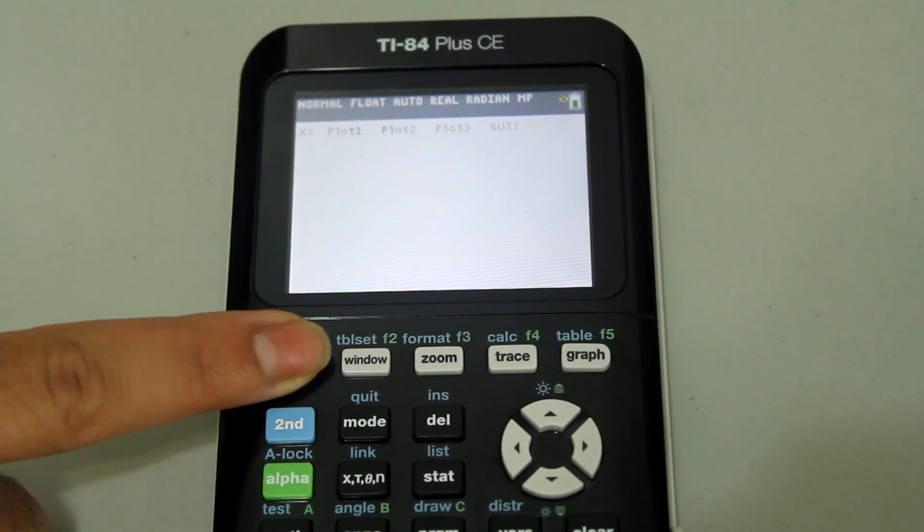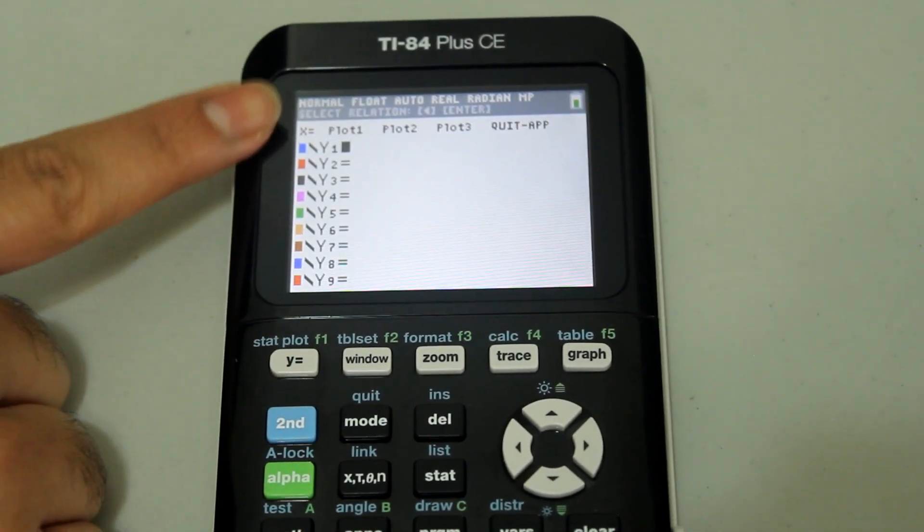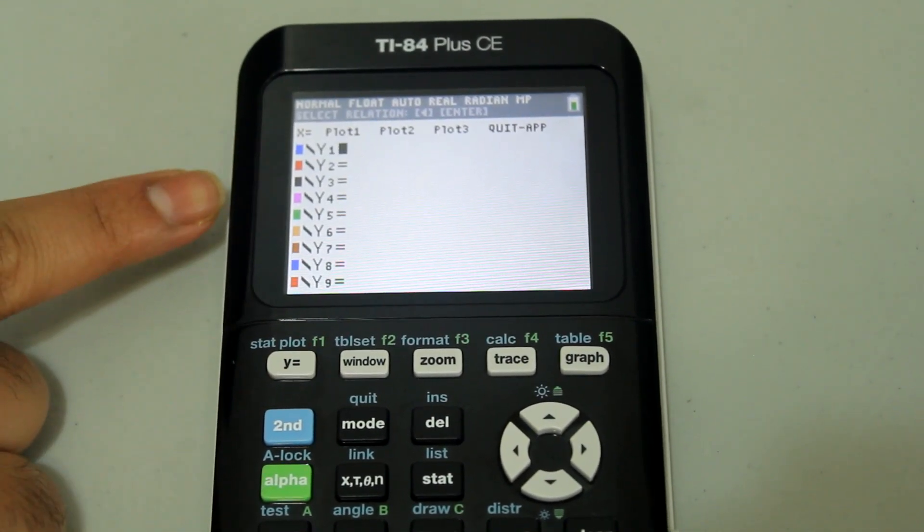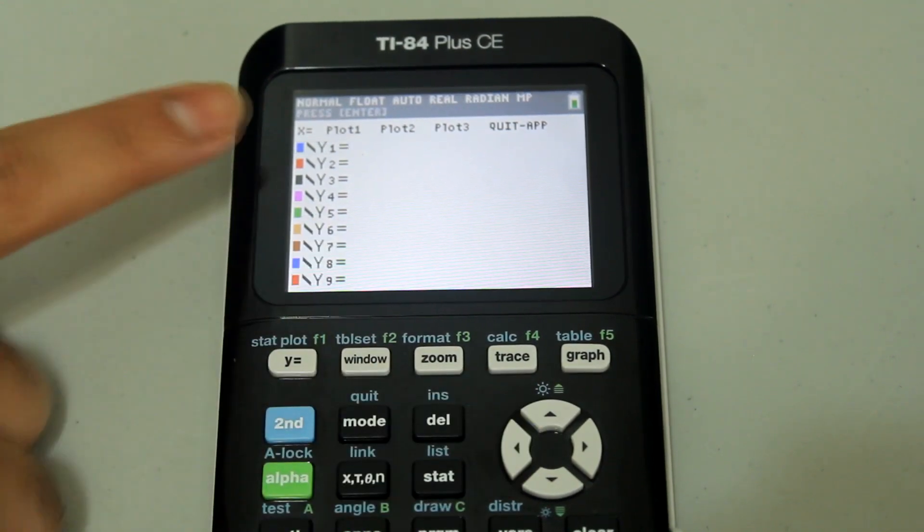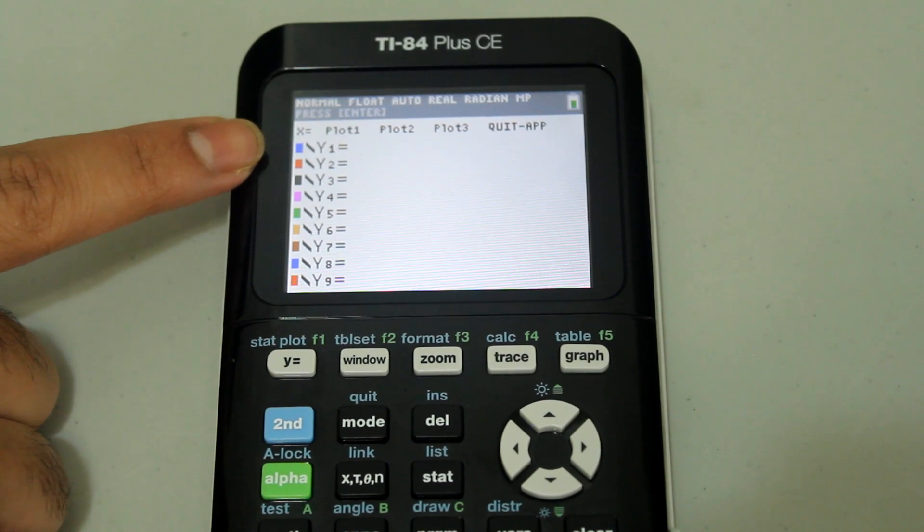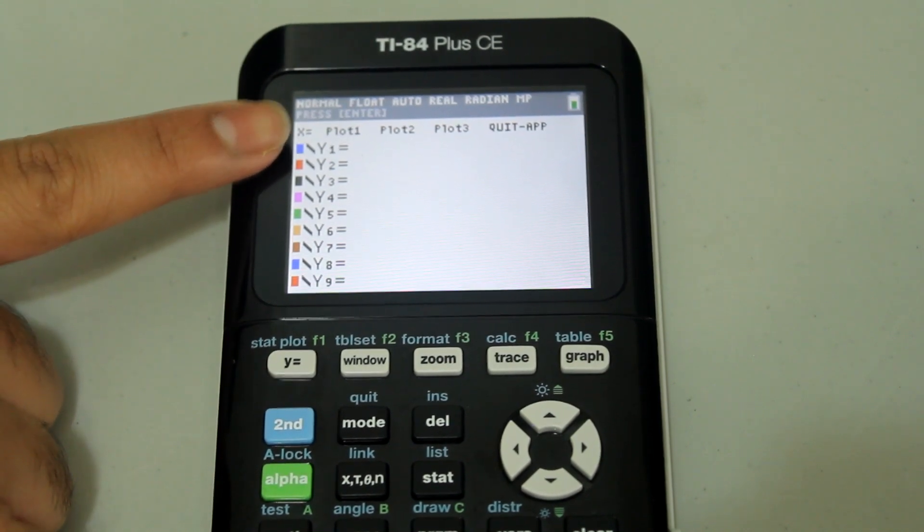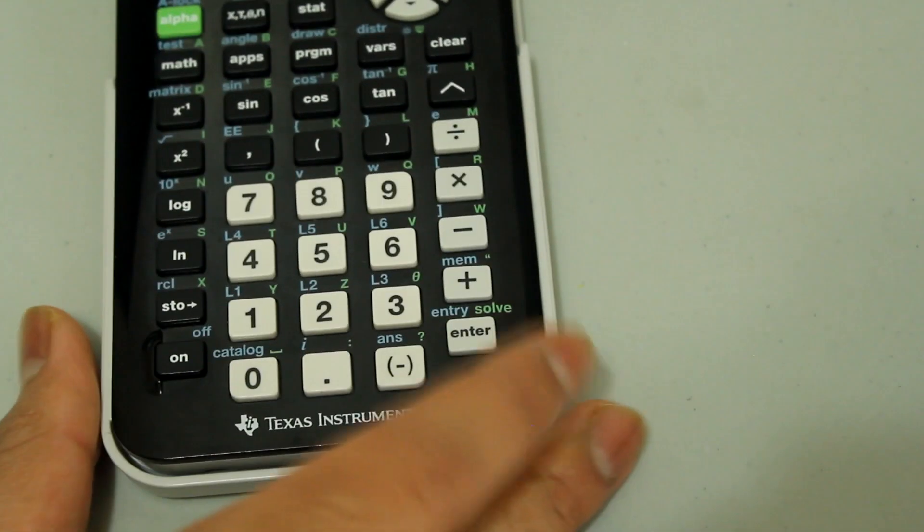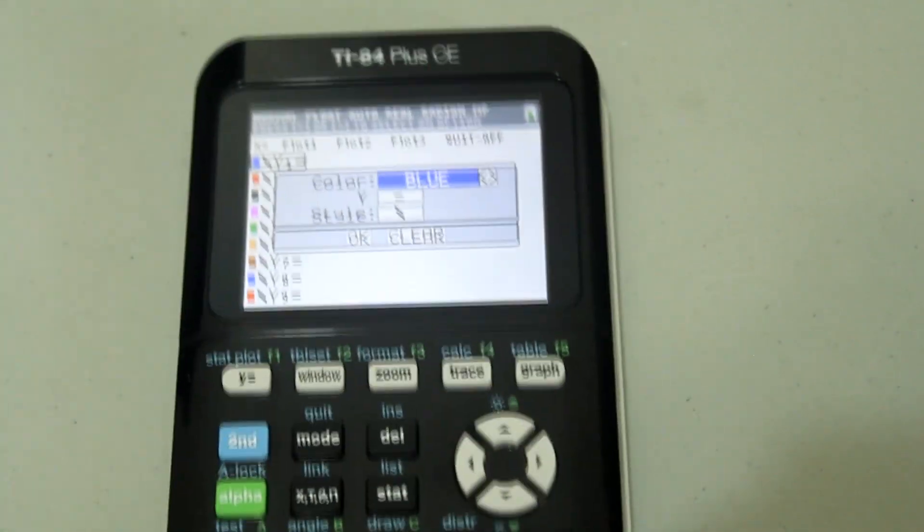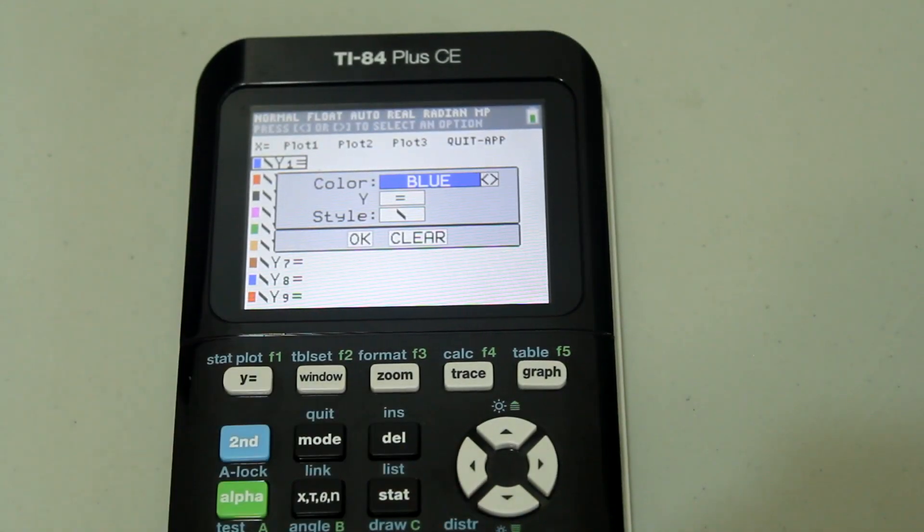First, press the y equals button and that opens the screen where we type in equations to be graphed. Next, press the left arrow to the point where you get a flashing rectangular box around y equals, and then press enter and that will open up a dialog box that looks like this.